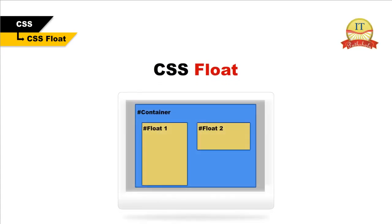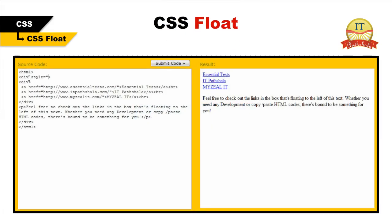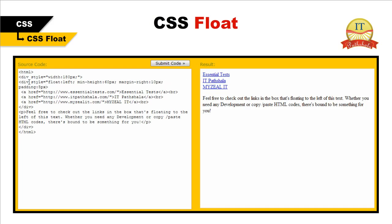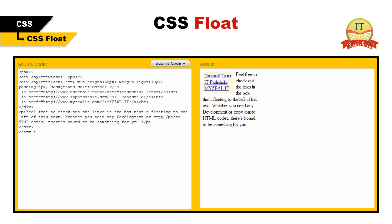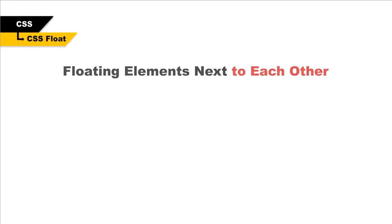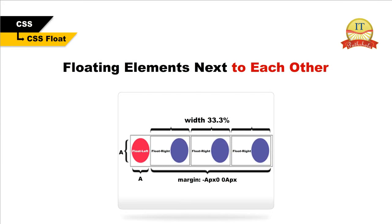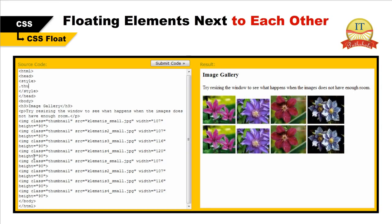The CSS float property enables you to determine where to position an element relative to other elements on the page. When you use the float property, other elements will simply wrap around the element you applied the float to. In the following example, we have set a div element to float left, which results in the rest of the content wrapping around it. You can also place several floating elements next to each other to create an image gallery.